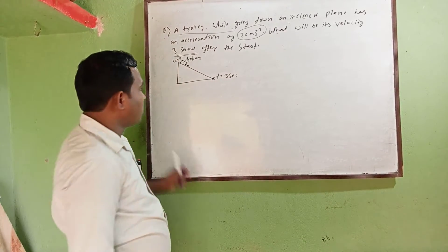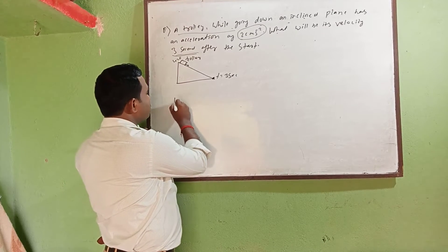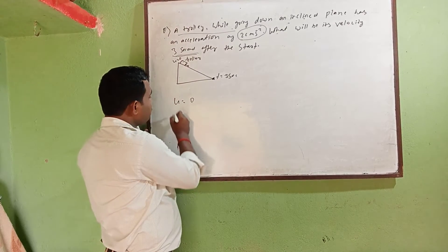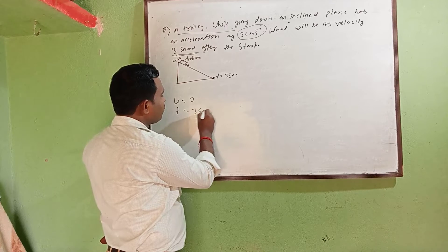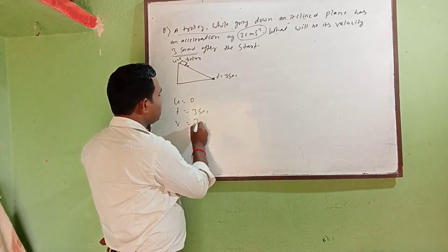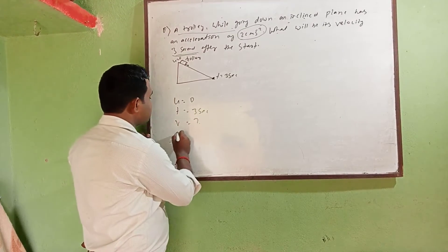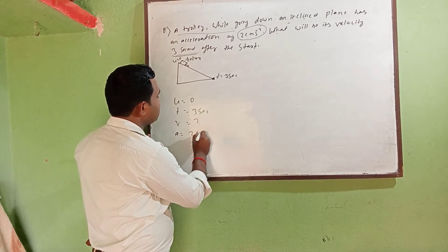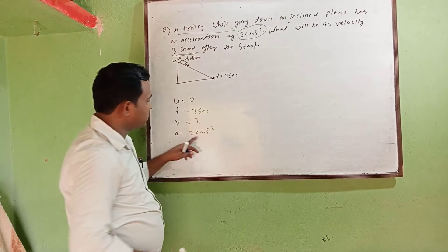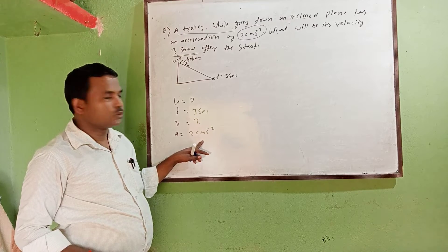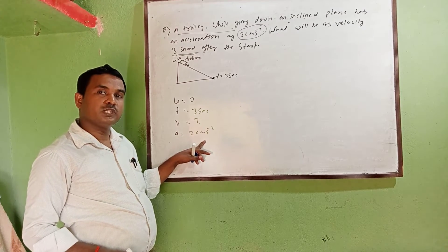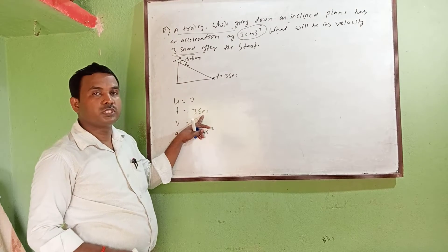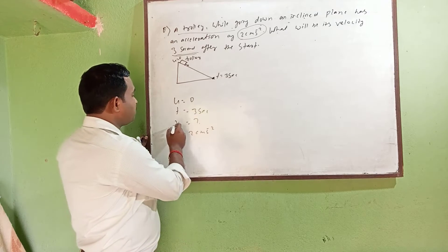What is given: u is equal to zero, t is equal to three seconds, and v you have to calculate. But acceleration is given - two centimeter per second square. You see that it is in the CGS form, so don't convert or you can convert to SI form because here is also in seconds. So you have to find out the velocity.